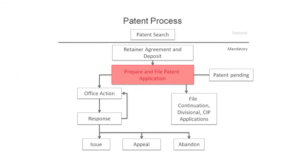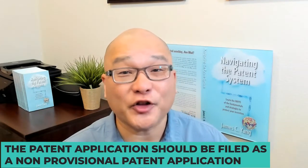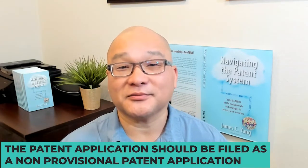If you don't find anything relevant during the patent search, the next step is to file a patent application. At this point, your invention is now patent pending. If you want your patent as fast as possible, the application should be filed as a non-provisional patent application. Additionally, you may want to pay for the expedite request so that the patent office will examine your application out of turn.